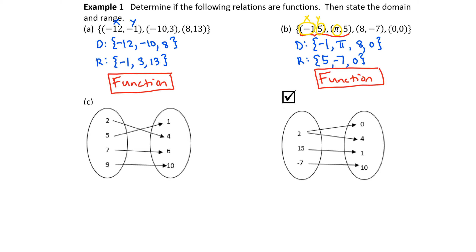Looking at the x value pi, which is about 3.14, is pi paired with any other y value? The answer is no — it has a unique y value. It doesn't matter that that y value was already used elsewhere. Pi has a unique y value, therefore this is a function. The y value can repeat in a function, but if the x value repeats, that means one x is paired with two different y's, and that would not be a function. So the y value can repeat, but the x value cannot.